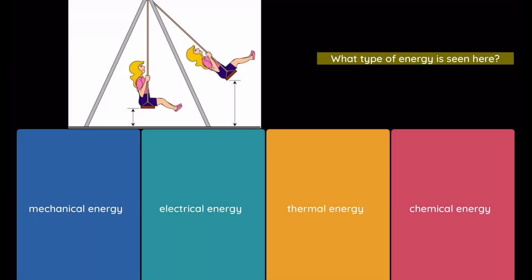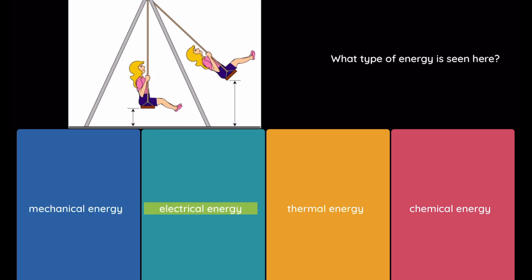Question: What type of energy is seen here? Option 1: mechanical energy. Option 2: electrical energy. Option 3: thermal energy. Option 4: chemical energy.